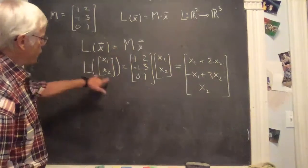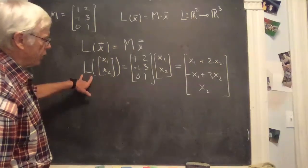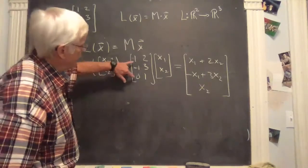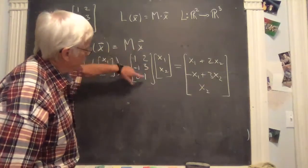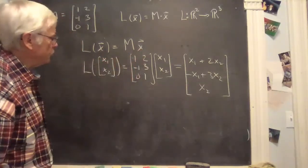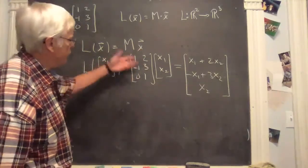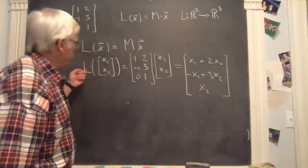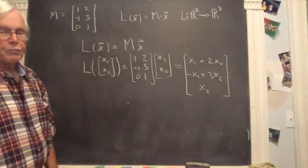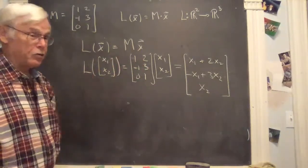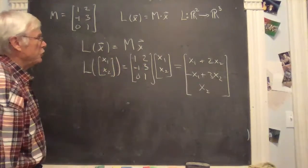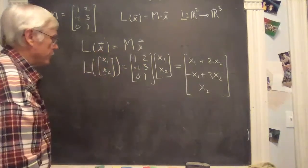They all mean basically the same thing. And you can check whether this function is one-to-one and onto, or one-to-one or onto, depending on what the properties of this matrix are. So if you reduce this matrix to reduced row echelon form, if it's got a pivot in every column, then this function is one-to-one. If it's got a pivot in every row, then this function is onto. That characterizes one-to-one and onto.